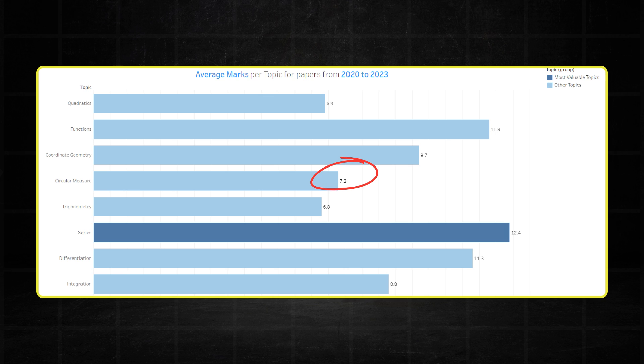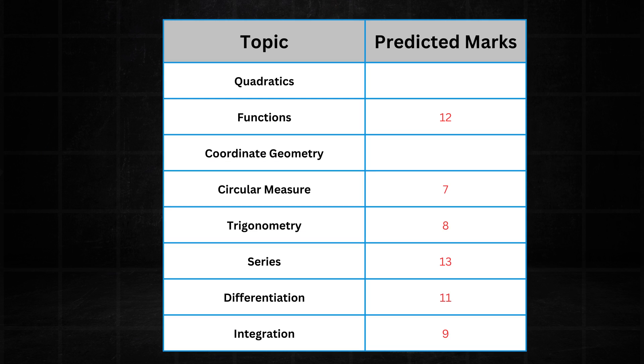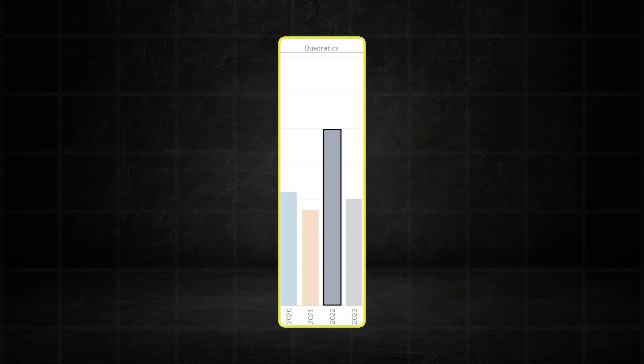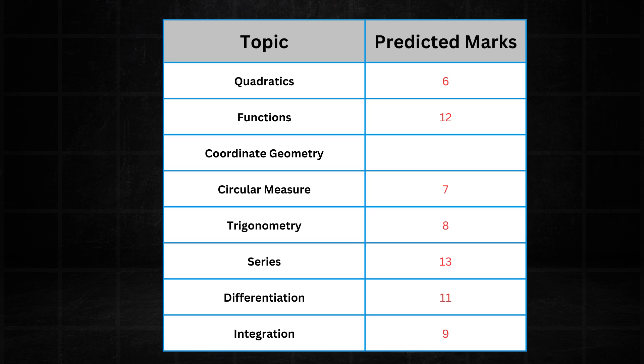Circular measure had a 7 mark showing which is in keeping with its average of 7.3 marks per paper and we expect something similar in the May, June series. It's a pretty consistent topic so I'll predict a 7 mark average in the May, June series as well. Quadratics had 6 marks in the February, March paper which is pretty much in check with its average and assuming that it doesn't explode like it did in 2022, I expect it to be around 6 marks in May, June.